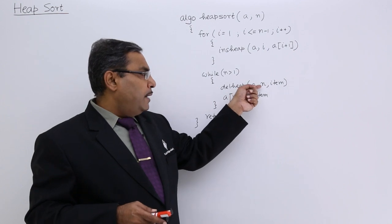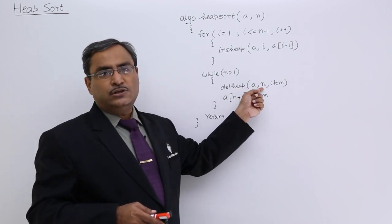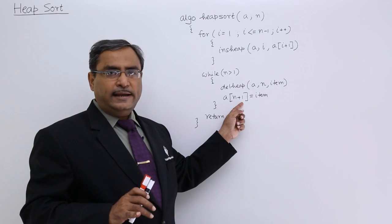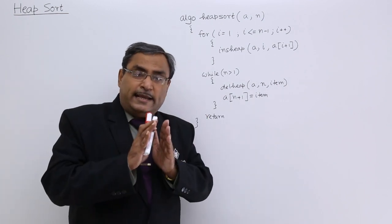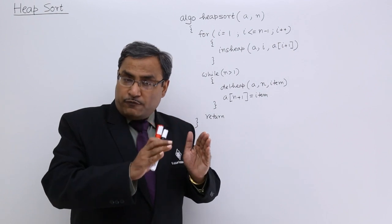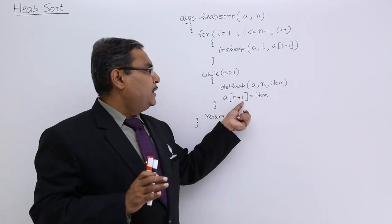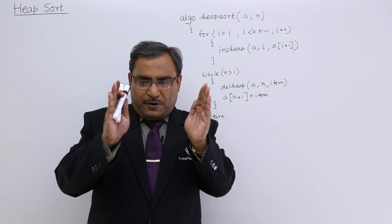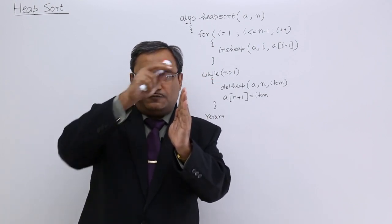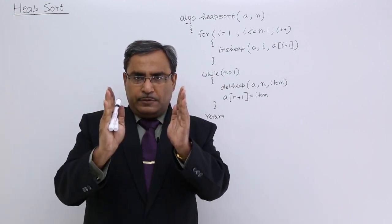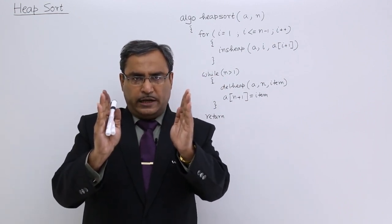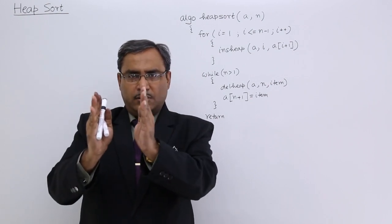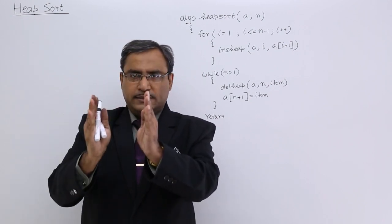So what will happen? When we execute this line, n has been decreased by 1. In our example, suppose n equals 10. After execution, n becomes 9. So array A contains heap tree nodes from location 1 to 9. The 10th location — that is, 9 plus 1 — stores the deleted item. Then from 1 to 8, the next deletion occurs and that free location stores the item. Then 1 to 7, and the deleted item is placed there. In this way the things take shape.